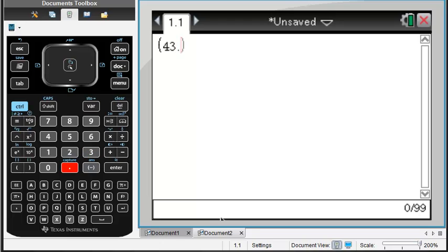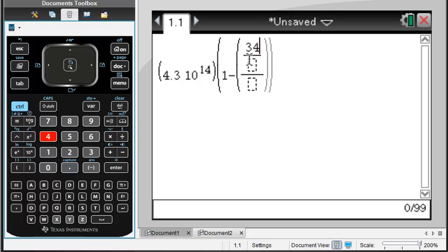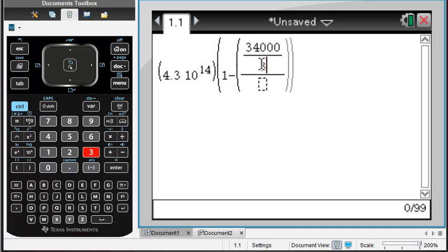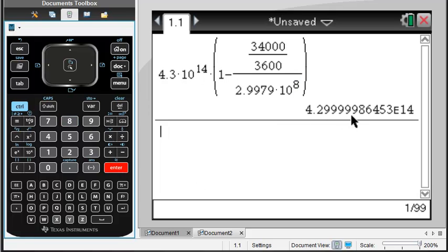Alright, so we got 4.3 times 10 to the 14th power. We'll multiply that by 1 minus 34,000 meters divided by 3600 seconds. And we're going to divide that by the speed of light, which is 2.9979 times 10 to the 8th meters per second. And that is going to give us 4.2999986, yada yada. And so we're going to go back 9 significant digits. So we got 1, 2, 3, 4, 5, 6, 7, 8, 9. So we're going to go back to the 6.